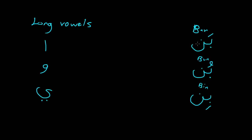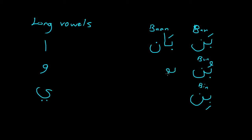So if you want to make these longer, it depends on what the vowel mark is and what the letter is — these are correlating. If you want to make the 'a' sound longer, you put the alif there, so 'ban' becomes 'bān'. Similarly with the waw and the dhamma, this would make 'boon'.